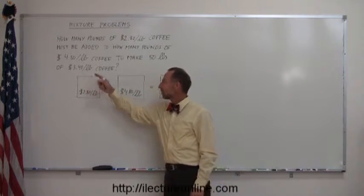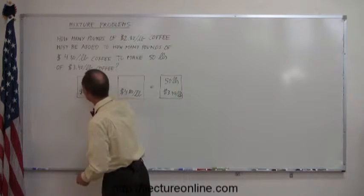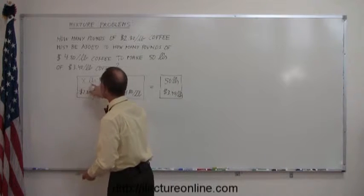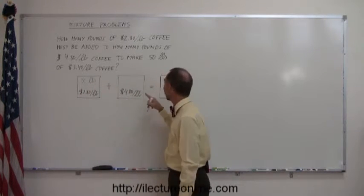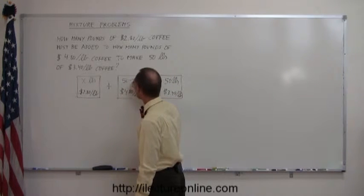So the question is how many pounds from this and how many pounds from that, and the way to represent that is let X be the amount of pounds that you start with over here, and then the total minus X is the amount that you'll need from this mixture.